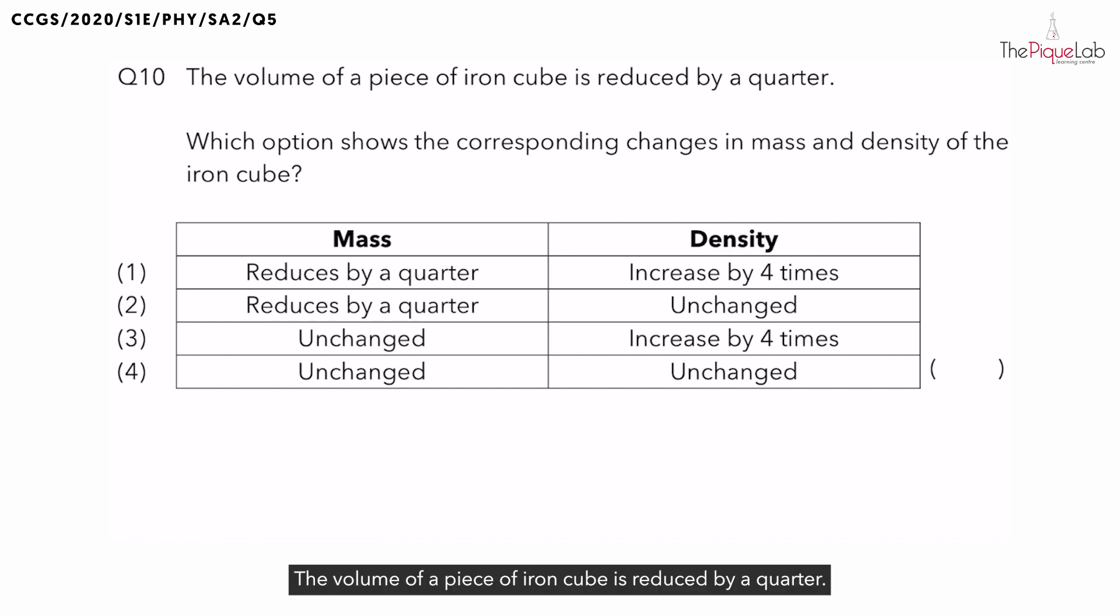Question 10. The volume of a piece of iron cube is reduced by a quarter. Which option shows the corresponding changes in mass and density of the iron cube?